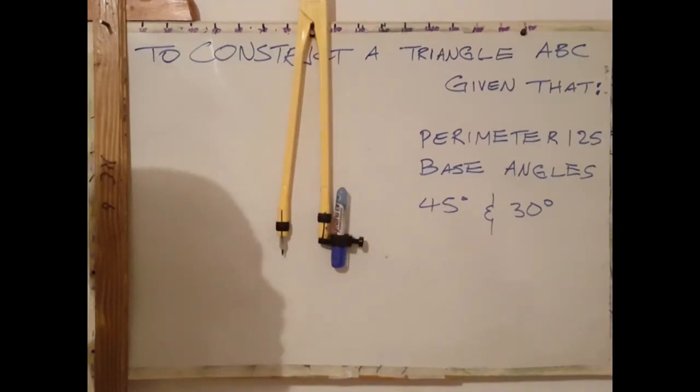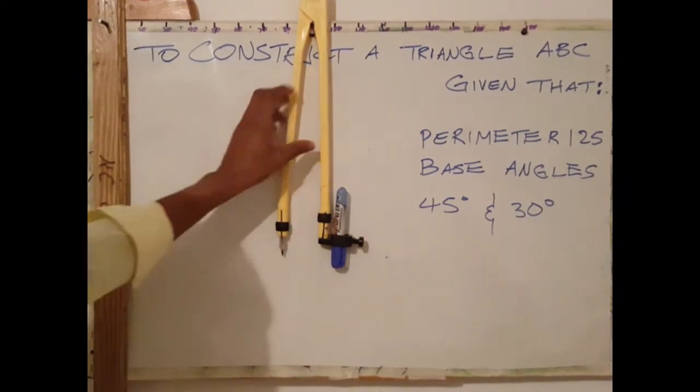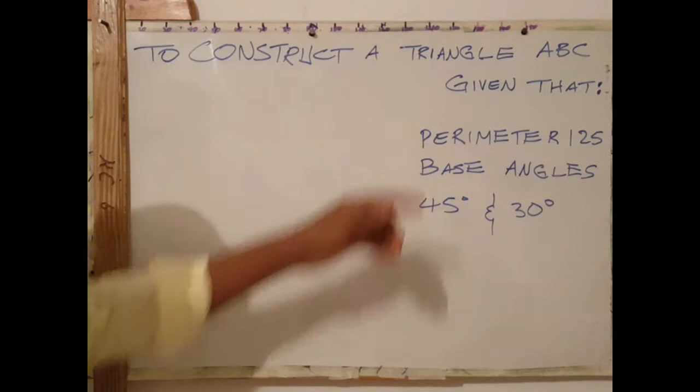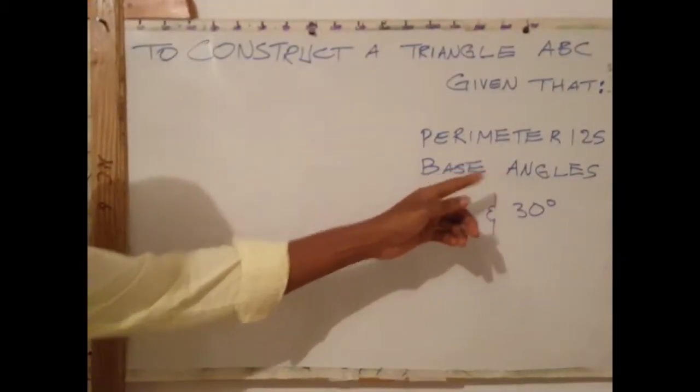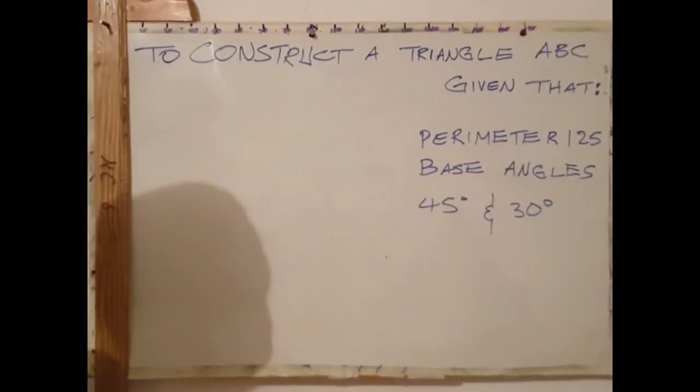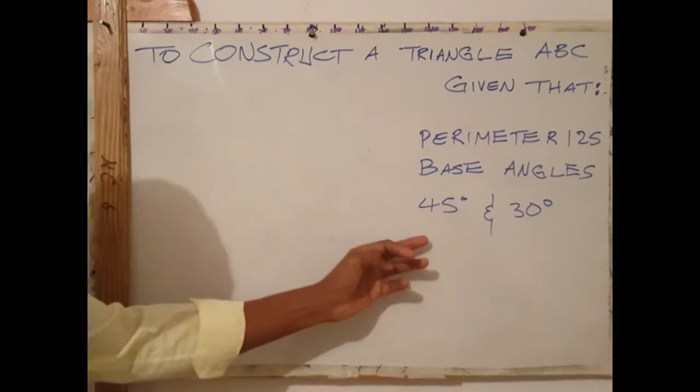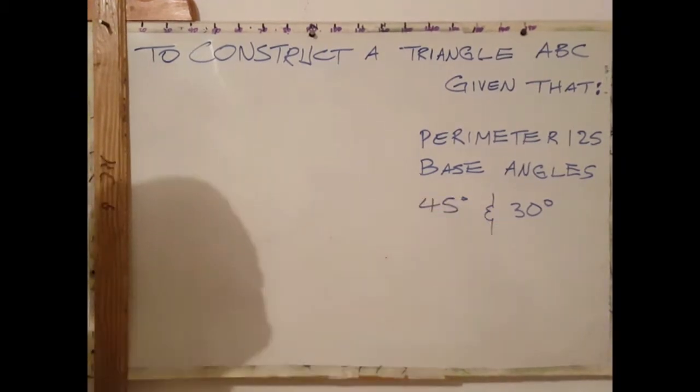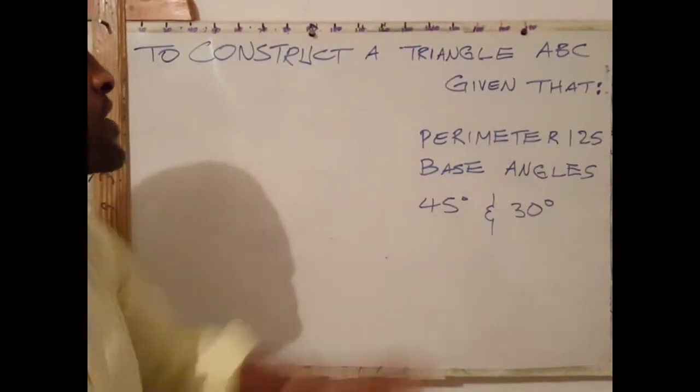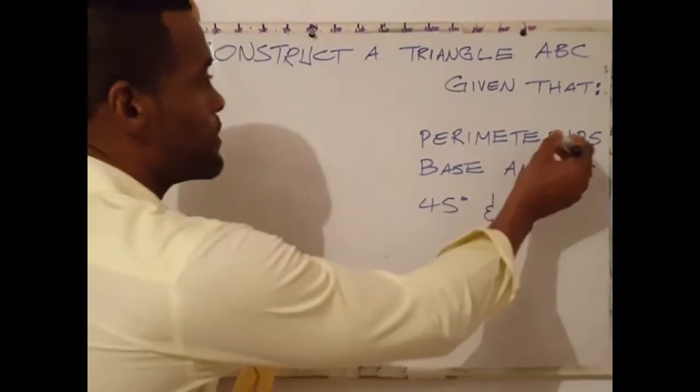Continuing on the topic of triangles, I'll be showing you how to construct a triangle ABC given the perimeter and the base angles. Base angles are given as 45° and 30°, while the perimeter is given as 120mm.